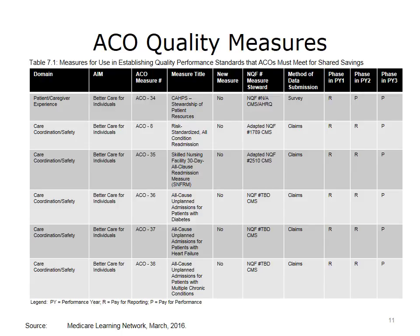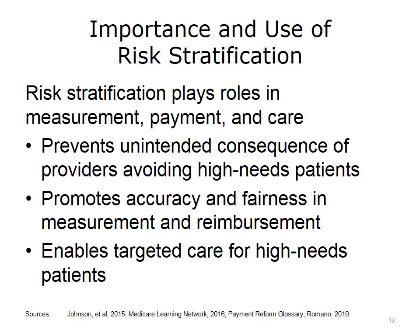Let's take a closer look at risk stratification. To understand its importance, consider that a severely ill patient is likely to require more services, and that even with excellent care, the patient may still have worse outcomes than a relatively healthy patient. If the value-based arrangement fails to account for those differences, it can create an unintended consequence where providers have an incentive to avoid caring for higher-needs patients. Taking risk factors into account makes measurement and payment more accurate and fair. In quality measurement, risk stratification affects scores so providers who care for sicker patients aren't unfairly compared with providers who care for healthier patients.